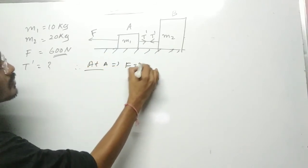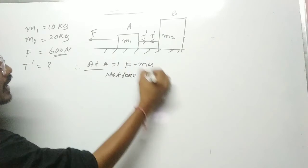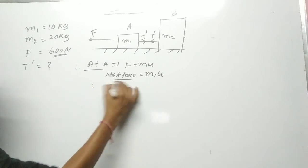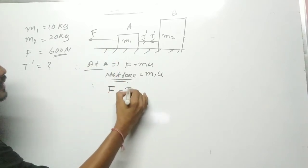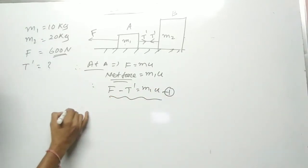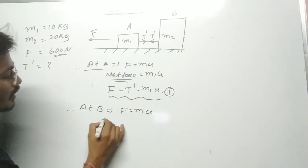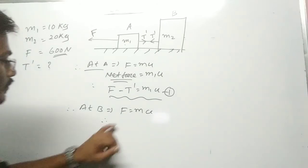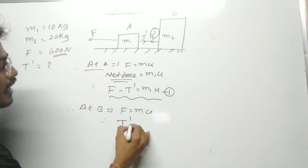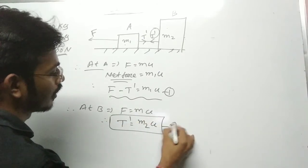For Case 2 at point A, as per Newton's second law, the net force equation: F minus T dash = m1 into a — that is equation number one. Now at point B, in this case the net force is only T dash acting. So T dash = m2 into a — that is equation number two.